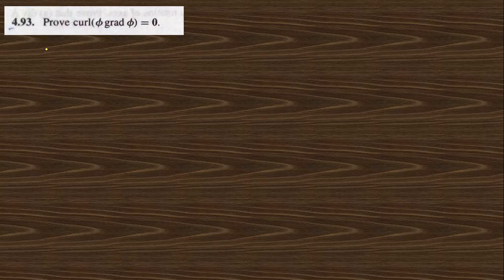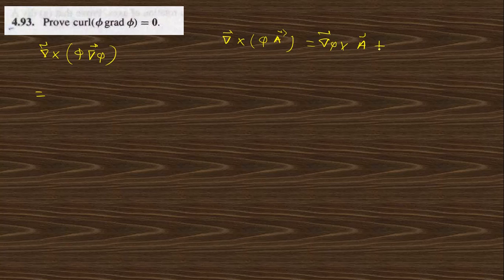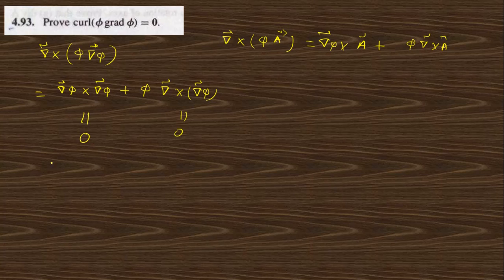Go to the next question: prove that curl(φ grad φ) = 0. Using the identity curl(φ·A) = grad(φ) cross A + φ curl(A), here A is grad φ. So this becomes grad(φ) cross grad(φ) plus φ curl(grad φ). Since grad(φ) cross grad(φ) = 0 and curl(grad φ) = 0, the result is zero. Hence proved.